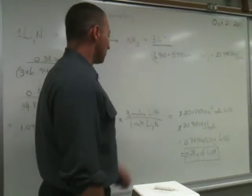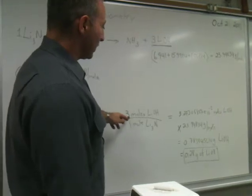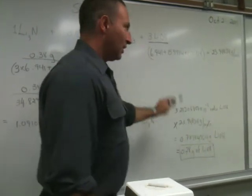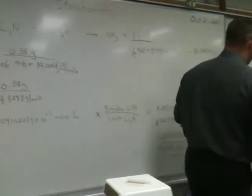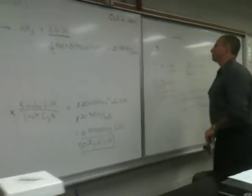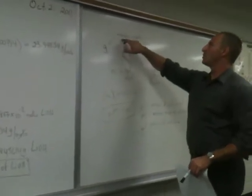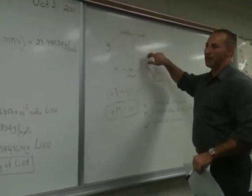So that ratio, that one to three ratio, will appear in the calculation where we have to find out how many grams of lithium hydroxide. Now, the form of all these calculations follows a very standard format. They're all grams to moles, moles to moles, moles to grams types of calculations.